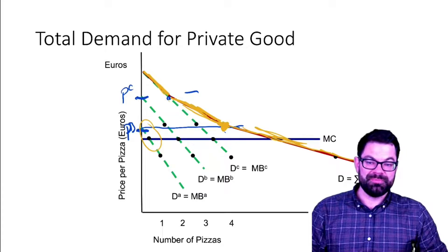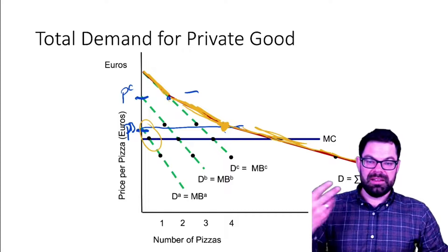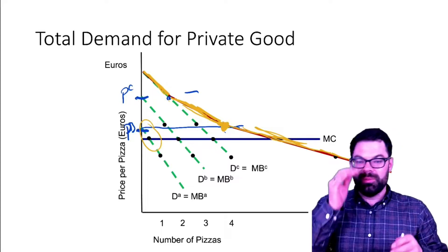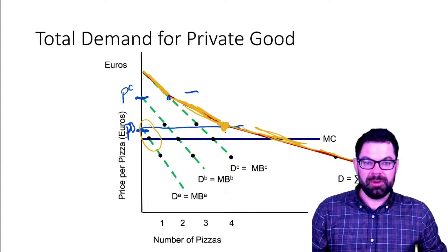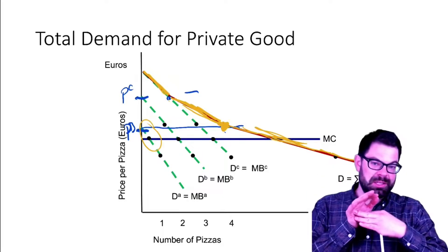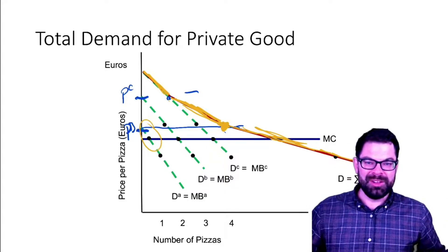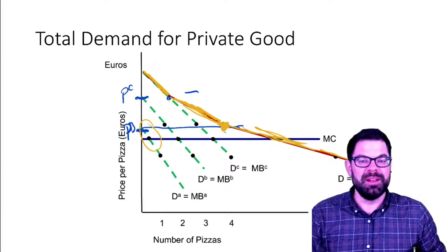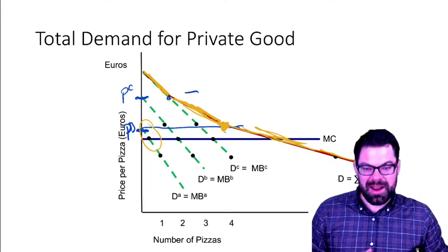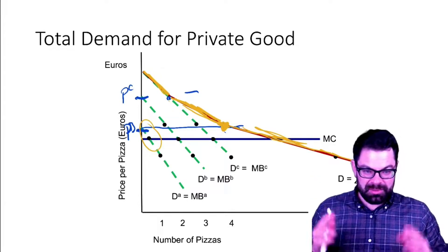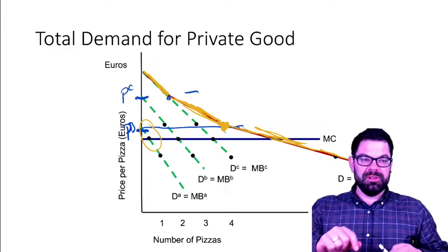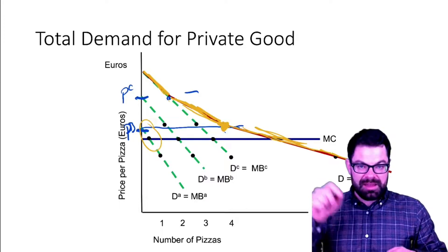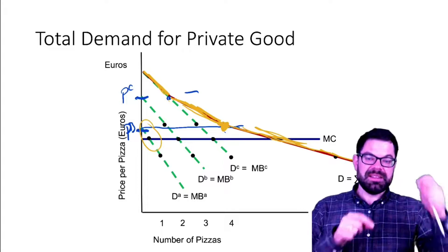In the research practice of economists, do we always do this addition? No. Typically we have maybe two types of consumers — one with a high and one with a low valuation of the good — and then the demand curve would have one kink point. We very rarely work with, say, four and a half million consumers in Ireland, as that would not be tractable. But in principle, that is how it works: we derive the demand for a private good by first looking at each person's demand curve and then adding them up horizontally.